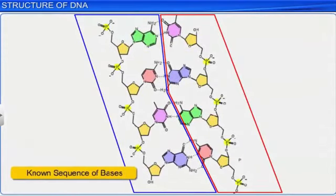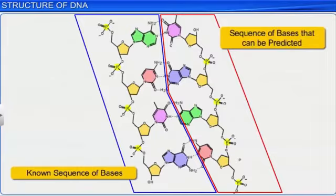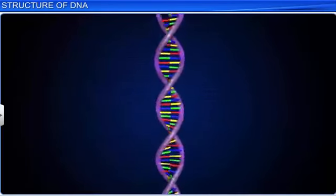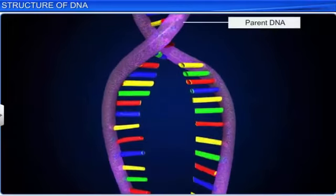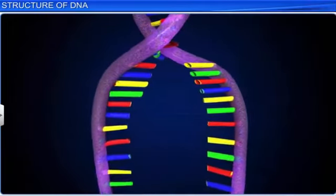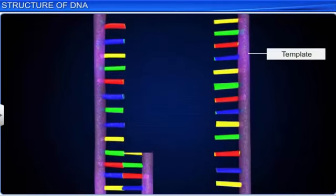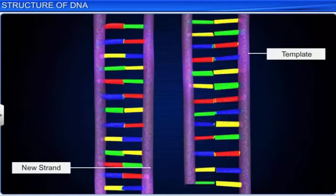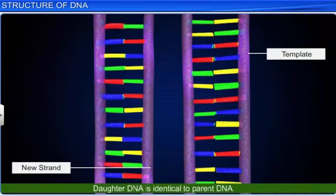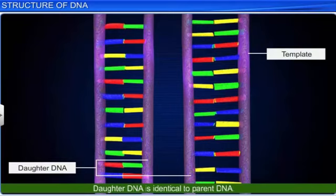Therefore, if we know the sequence of bases on one strand, it is possible to predict the sequence in the other. Moreover, when two strands of a parental DNA separate, each serves as a template for synthesis of a new daughter strand because of complementary base pairing. The two double stranded daughter DNA generated are identical to the parent DNA molecule.